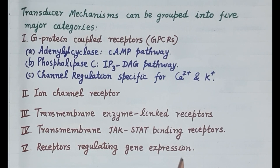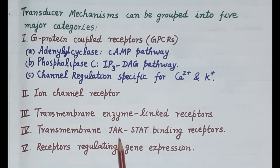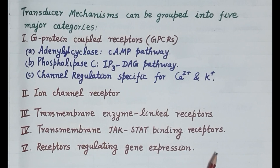The fifth type of transducer mechanism is receptors regulating gene expression. Steroidal hormones such as glucocorticoids, mineralocorticoids, androgens, estrogens, and vitamin D produce their response through these receptors. Each of these five transducer mechanisms will be discussed in detail in subsequent videos in this pharmacodynamics series. This was a quick overview of transducer mechanisms and their different types — kindly like, subscribe, and share. Thanks for watching.